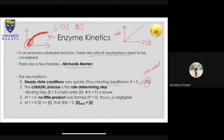This graph has a few properties: v-naught is the initial rate of velocity, and v-max is when you have saturated enzyme. However, to understand the kinetics of an enzyme, you can't simply look at the scenario at equilibrium, because in reality there's no true equilibrium — the ES complex will always produce a product.